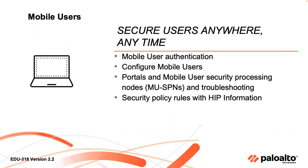Hey everybody, welcome to the next in our series of webinars dealing with best practices for Prisma Access deployments. We're going to be concentrating on the mobile user solution today. We're going to cover lots of different aspects of it — authentication options and some best practices there, a quick run through the configuration steps. We're going to talk about all the different components: the portals, the mobile user security processing nodes, the client software. We'll even go through some troubleshooting and best practices. One of the features we're going to be highlighting is the use of HIP, or host inspection profiles.